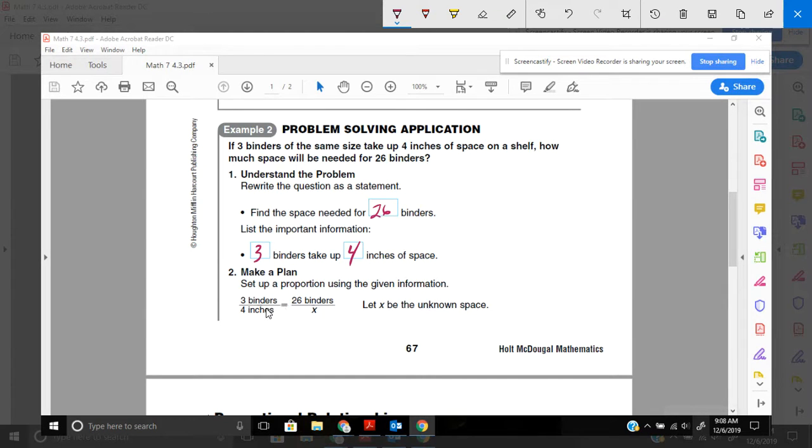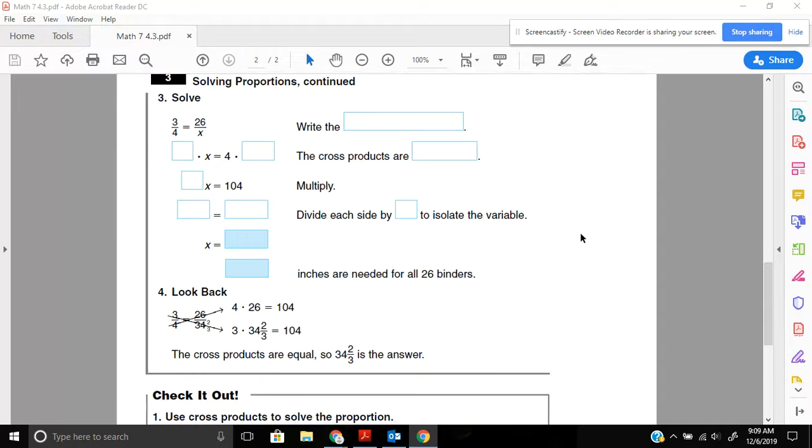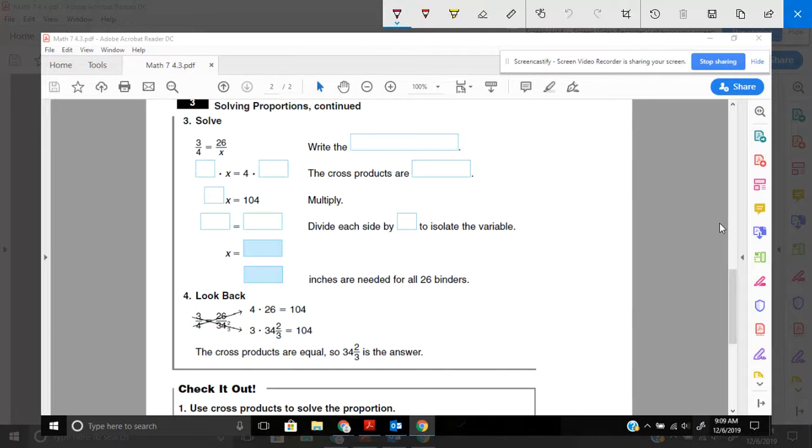So let's write a proportion using the given information. I have 3 binders and those 3 binders take up 4 inches. I'm going to set that equal to, well, I know that in the end I need 26 binders. I'm trying to find how many inches would 26 binders take up. I'm going to flip to the back of your page now. So here's 3 and 4. Let's solve this proportion. I'm going to use the cross-products property. So write the proportion.